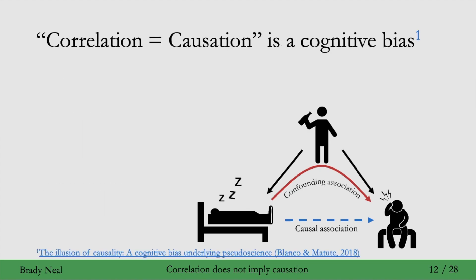Many of us have learned that correlation does not imply causation, but that doesn't stop us from using this heuristic all the time. Correlation equals causation is actually a cognitive bias.